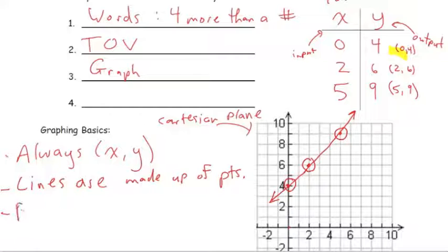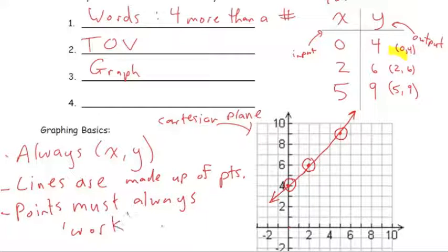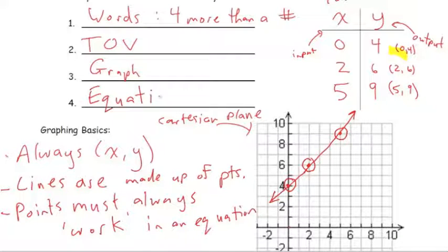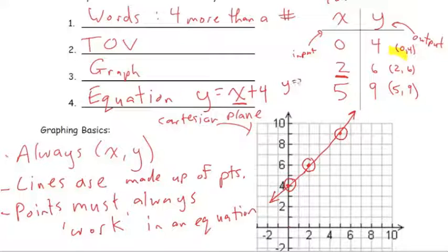Lines are just made up of points, and points must always work in an equation. The last way to show a relationship is to use an equation. For our example, the equation is y equals x plus 4. If we input x equals 2, then y equals 2 plus 4, which is 6 — matching the table of values.